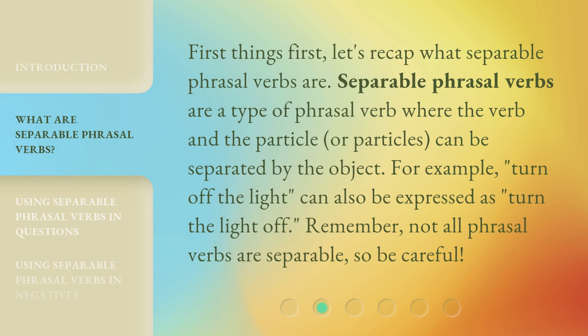First things first. Let's recap what separable phrasal verbs are. Separable phrasal verbs are a type of phrasal verb where the verb and the particle, or particles, can be separated by the object. For example, 'turn off the light' can also be expressed as 'turn the light off.' Remember, not all phrasal verbs are separable, so be careful.